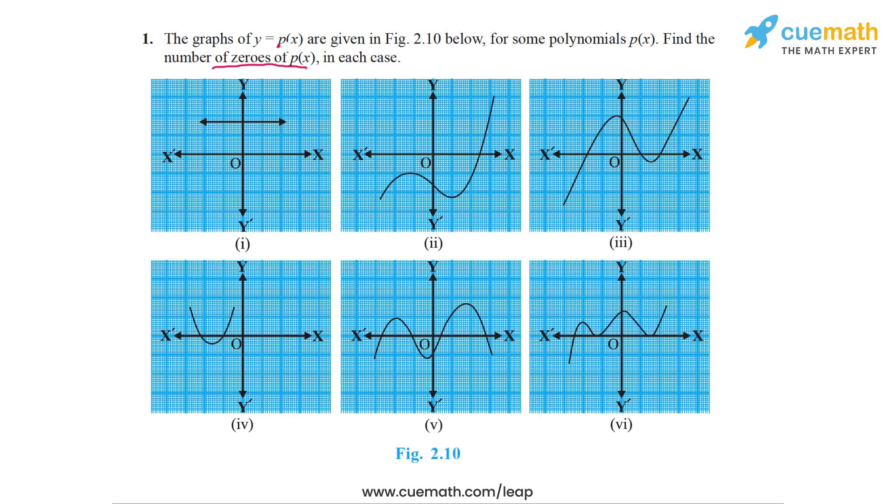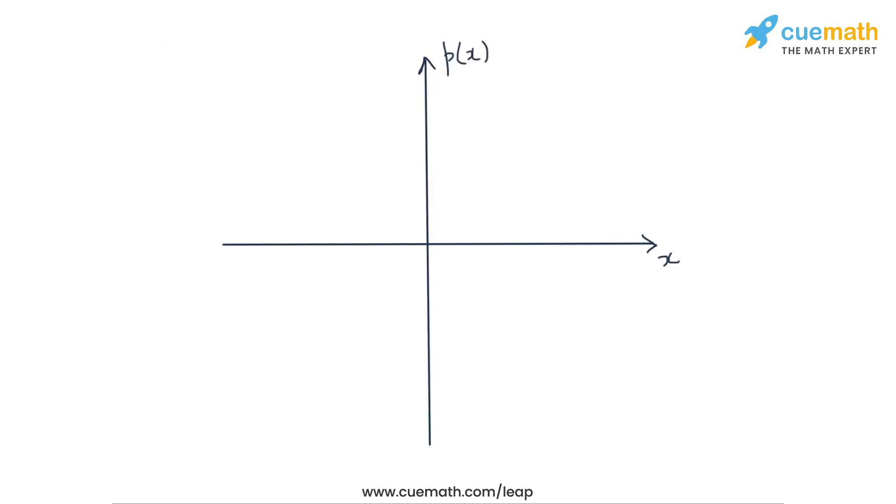Well, let's take any arbitrary graph of any polynomial p(x). So here is an axis x and p(x). So suppose that the graph of p(x) looks something like this. Now for any value of x, so let's say this is a value of x, for this value of x, let's call it x1, the corresponding value of the polynomial will be given by this point here. And the corresponding value of p(x) will be this value here.